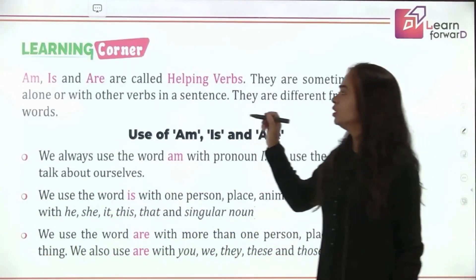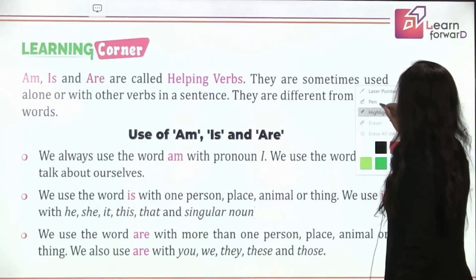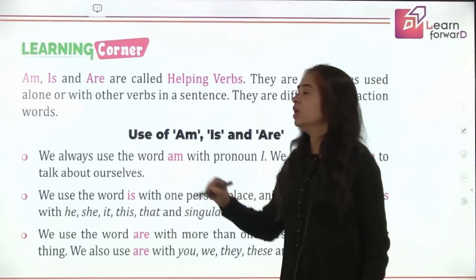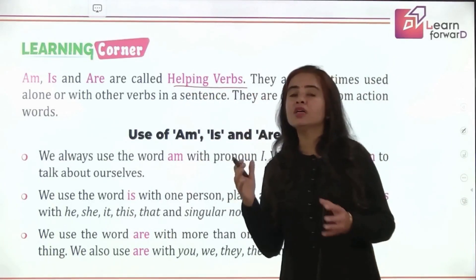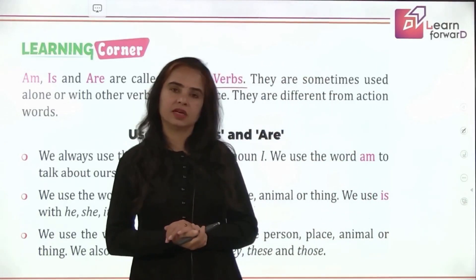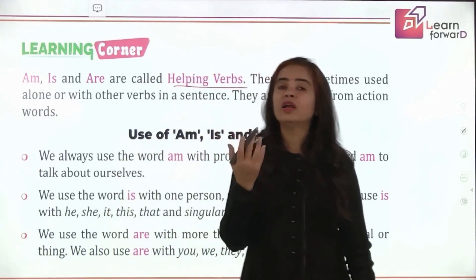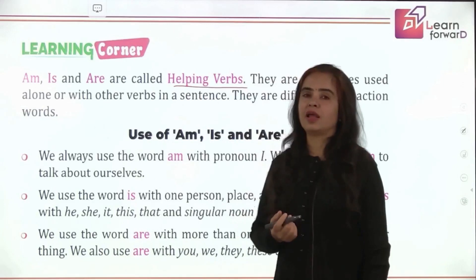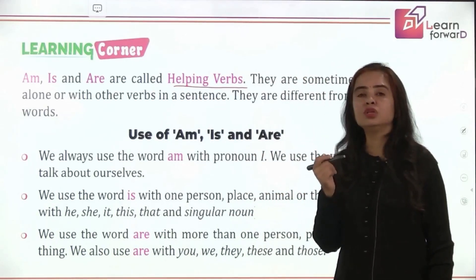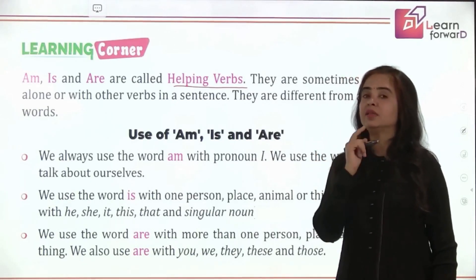Let's start with the new journey. We will learn about 'is' and 'am'. Children, 'is' and 'am' are called helping verbs. They are helping verbs because most of the time they stand with some other verb in the sentence. But sometimes they might stand alone also. So what and where do we use 'is' or 'am'?